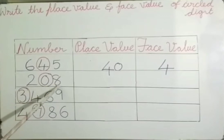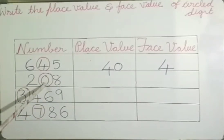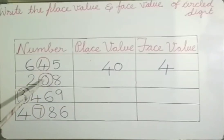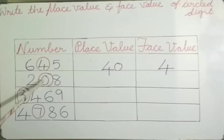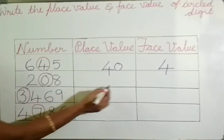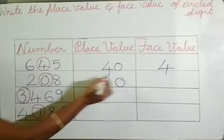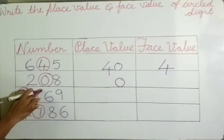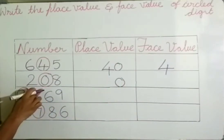In the number 208, the circled digit is 0. 0 is at the 10's place, so the place value of 0 is 0. Its face value is also 0.